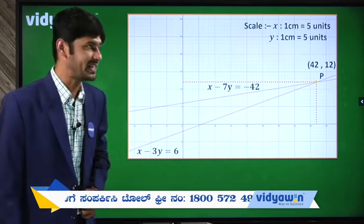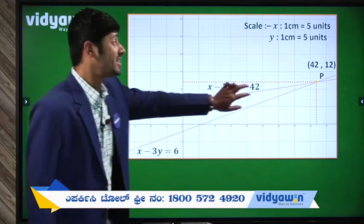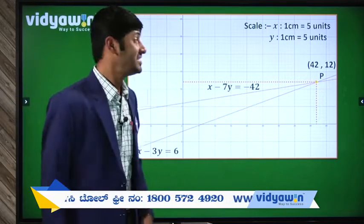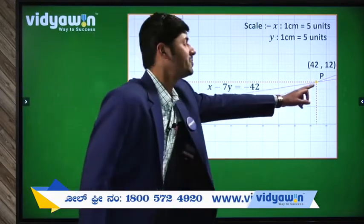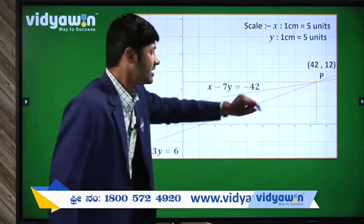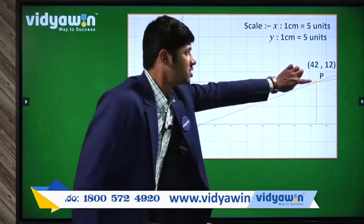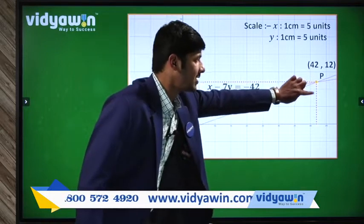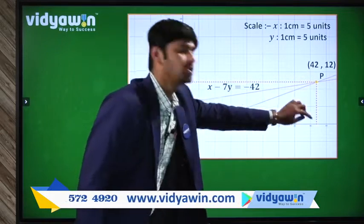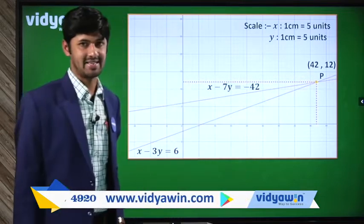A very interesting point is that both the lines intersect at point P. Here, draw a perpendicular line to the X axis.